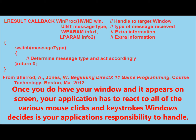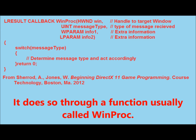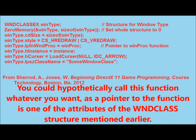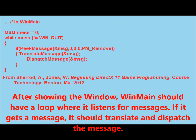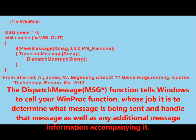Once you have your window and it appears on screen, your application has to react to all of the various mouse clicks and keystrokes Windows decides is your application's responsibility to handle. It does so through a function usually called WinProc. You could hypothetically call this function whatever you want, as a pointer to the function is one of the attributes of the WinClass structure. Windows doesn't care what it's called — it just needs to know where it is. After showing the window, WinMain should have a loop where it listens for messages. If it gets a message, it should translate and dispatch the message. The dispatchMessage function tells Windows to call your WinProc function, whose job it is to determine what message is being sent and handle that message, as well as any additional message information accompanying it.